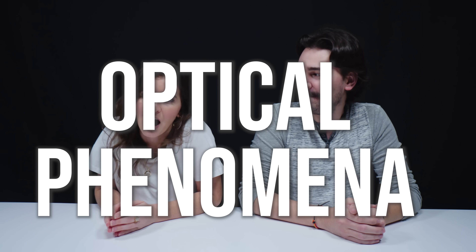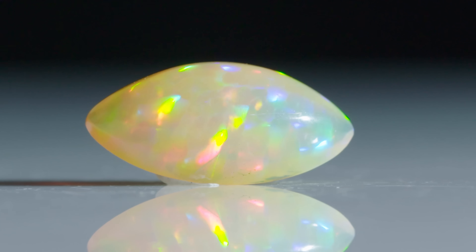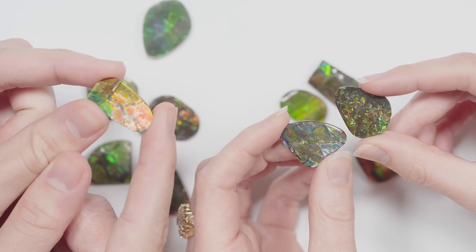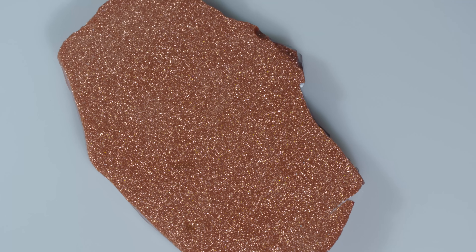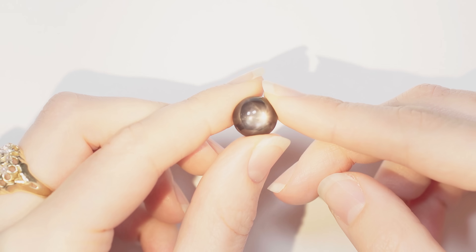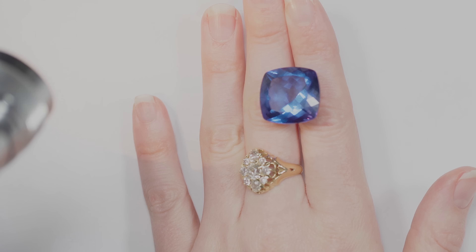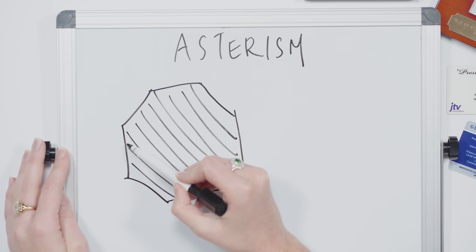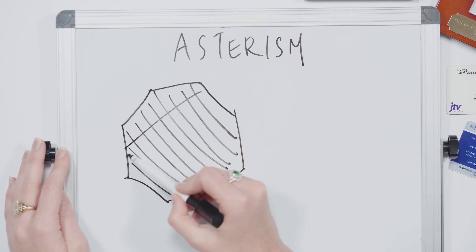What we want to talk to you about today is optical phenomena. Optical phenomena in the gemstone world basically means some sort of exceptional visual effect, either within the stone or on the surface of the stone. So we're going to go through 10 different optical phenomena, talk about why they occur, how it happens, and show you some pretty cool specimens today.